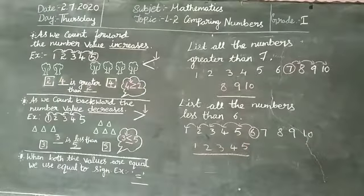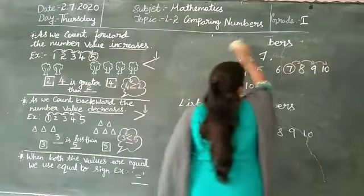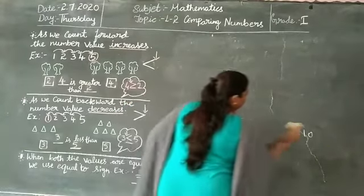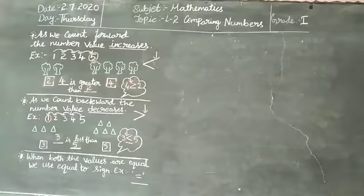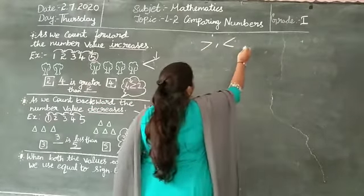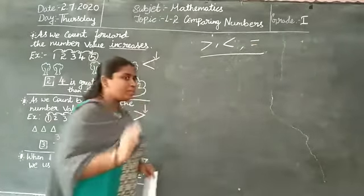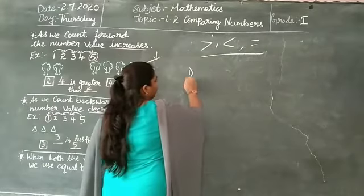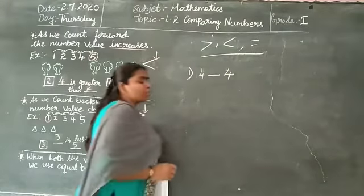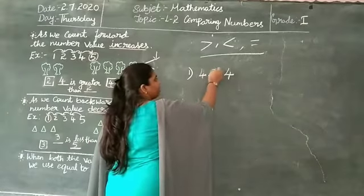Now let's do more problems so that we come to know how to use the sign. See here, I will write some problems. Use this sign. By using this sign, we will do some problems. Problem 1 — 4 equals 4. Why should we use equal here? Because both values are same.